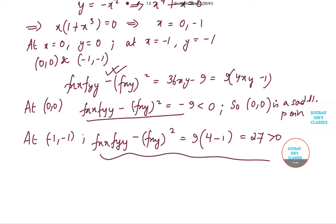So once it is greater than 0, and one more point where I need to add here that fxx at (-1,-1) is equal to minus 6 which is less than 0. So this indicates that (-1,-1) is the local maxima point.